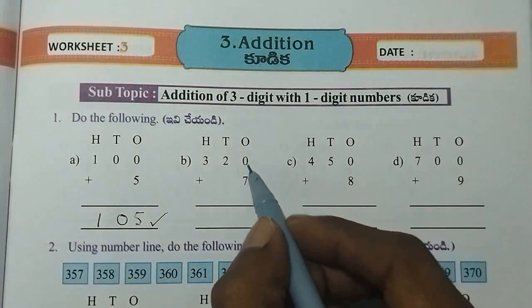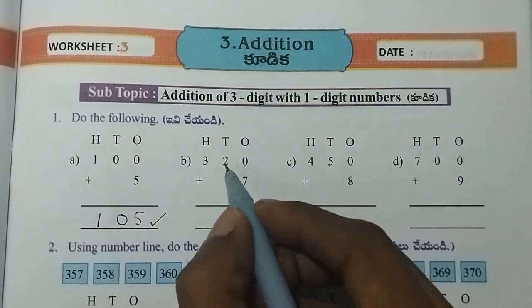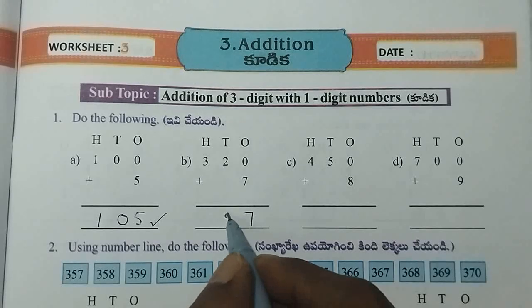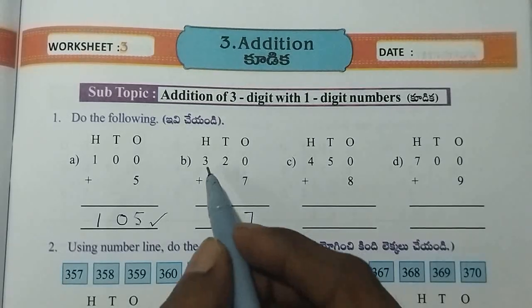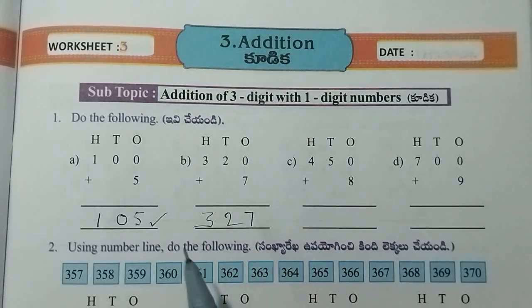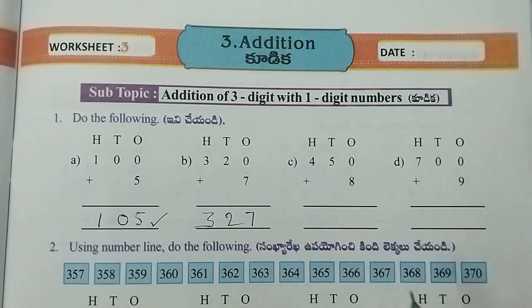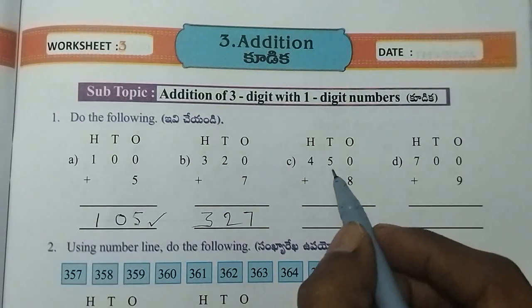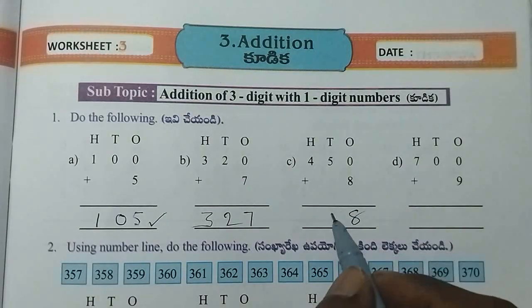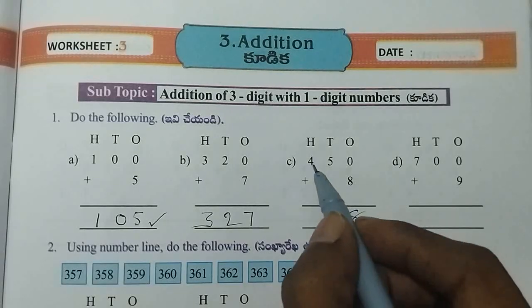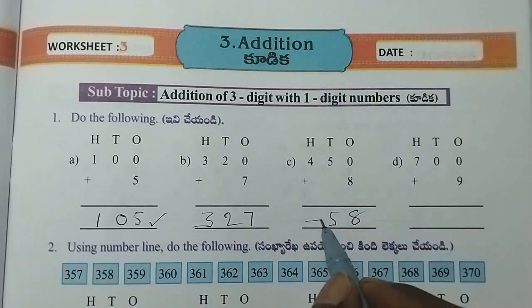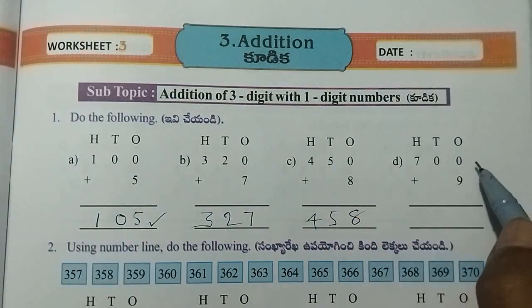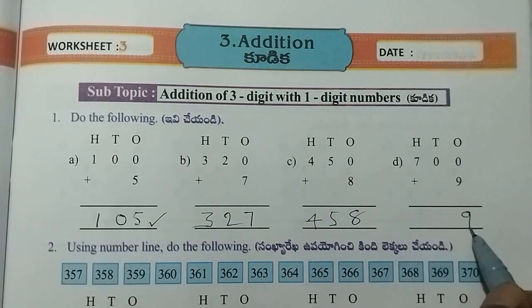Here we have 0 plus 7. Here we have 0. 2 equals 2. Here we have 1. Here we have 0 plus 8. This is 8. Here we have 5. Here we have 4.